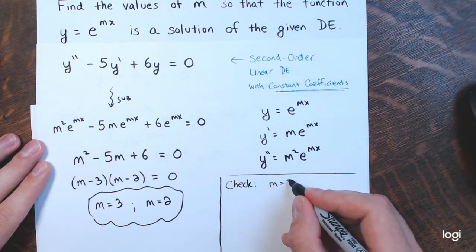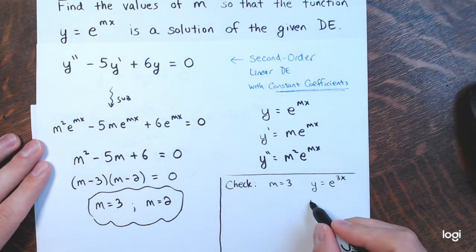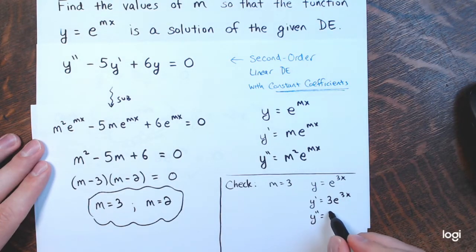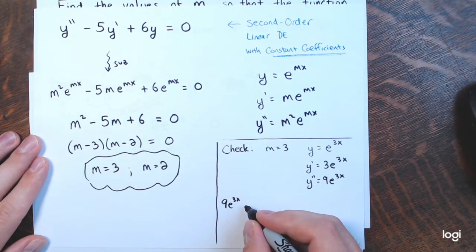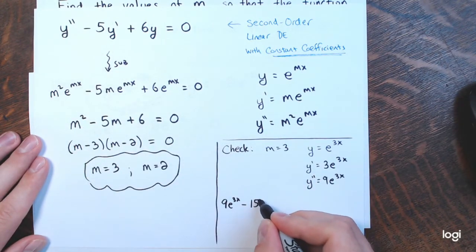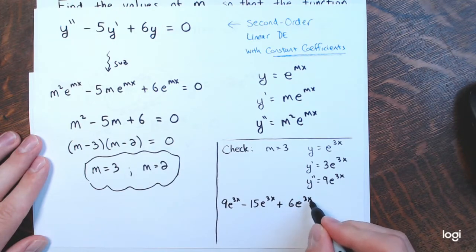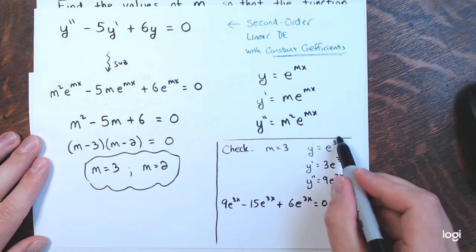We can check when m equals 3: y equals e to the 3x, y prime equals 3 times e to the 3x, y double prime equals 9 times e to the 3x. Substituting into the equation: 9 e to the 3x minus 15 e to the 3x — because 5 times 3 is 15 — plus 6 e to the 3x equals 0. Yes, negative 6 plus 6 gives 0, so y equals e to the 3x is indeed a solution.